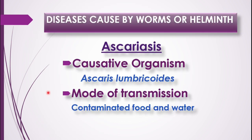We earlier learned that diseases are caused by pathogens falling under several categories: bacteria, virus, fungi, helminths, and protozoans. Let us now study about the next category — diseases caused by worms or helminths. The first disease is Ascariasis.